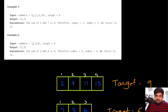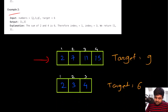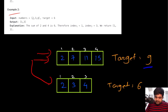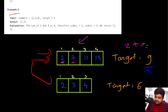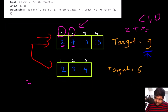Let's understand this with a couple of examples. In example one, we are given a numbers array where indexing starts from one rather than zero. We are given a target value of nine. We need to find any two values that sum up to nine. We can clearly see that two plus seven equals nine, and we need to return their index values. The answer in this case is one and two.